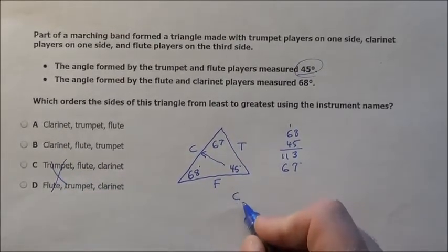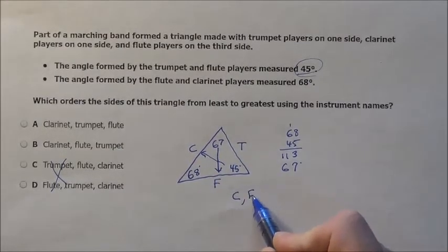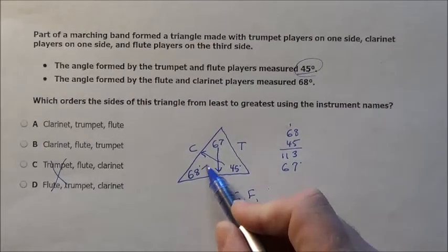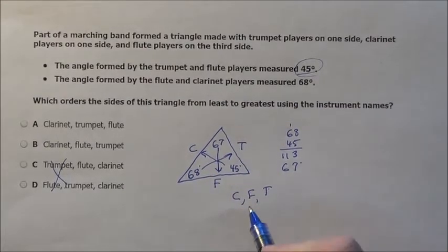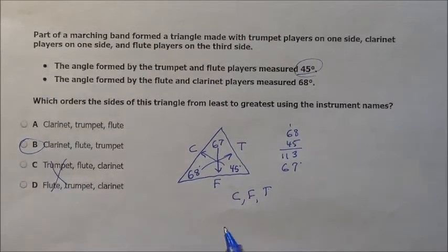So it's going to be clarinet's the smallest, then the next smallest, well here's the next smallest angle, is going to be the flute players, and finally the trumpet players are going to be the most. So it's going to go clarinet, flute, trumpet, choice B.